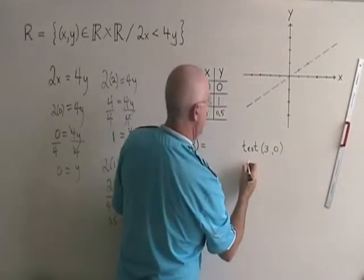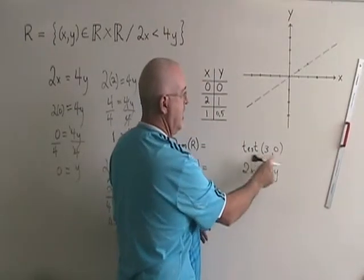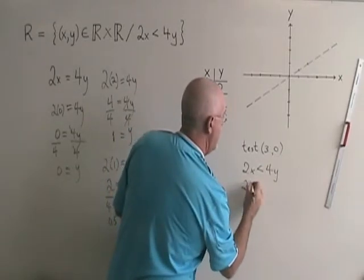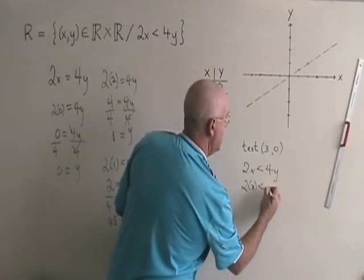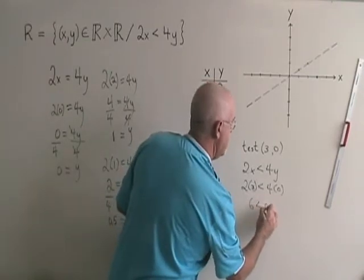I write my original inequality 2x less than 4y, and I replace the x with 3 and the y with 0. 2 times 3 is less than 4 times 0. 6 is less than 0.